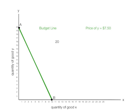We know we can buy 20Y, which is that 20 right there. If you take that 20 times $7.50, that equals $150, which is our total income.